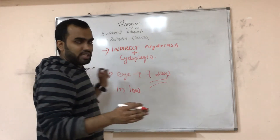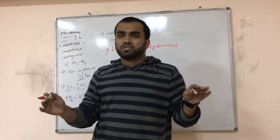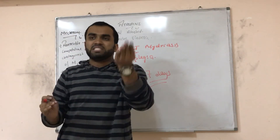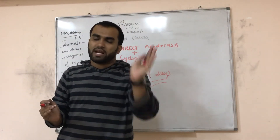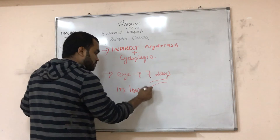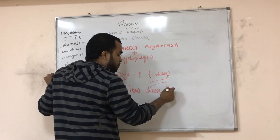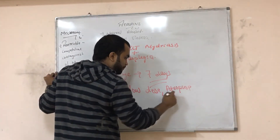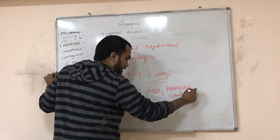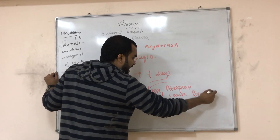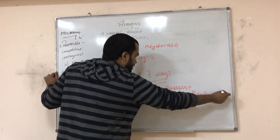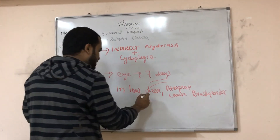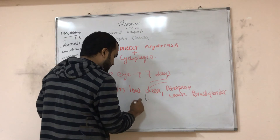Atropine blocks the parasympathetic system, so sympathetic goes high, causing tachycardia. However, in lower doses, atropine causes bradycardia — because it is blocking the presynaptic membrane.